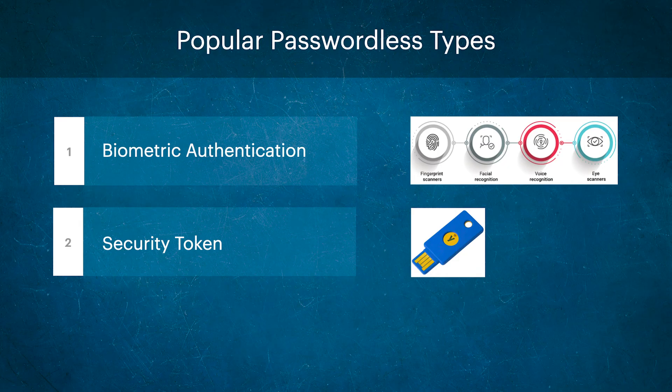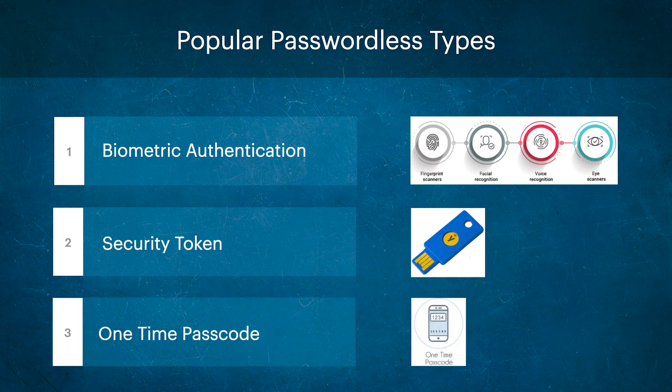The second method is security tokens. This uses a physical device such as a USB key or smart card to generate a one-time code that is used to authenticate the user. Security tokens are highly secure as they are difficult to duplicate or steal. They also provide an additional layer of security, as the token must be in the possession of the user to access the service. Some popular security tokens include Google's Titan Security Key and Yubico's YubiKey.